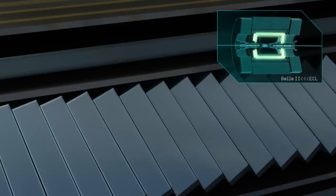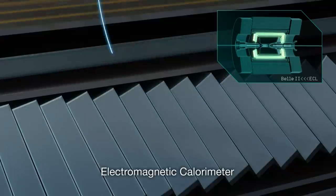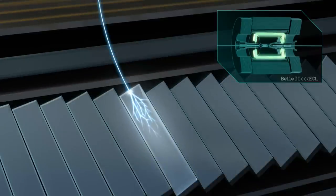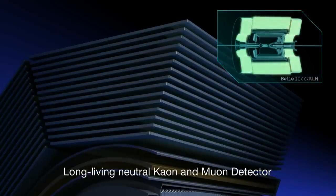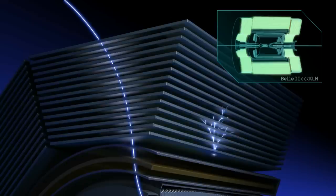Then, there is an electromagnetic calorimeter. This detector precisely measures the energy of photons and electrons. The outermost detector is the K-long and muon detector. It detects muons, which penetrate most of the detector, and neutral K-longs, which cannot be measured with the inner detectors.